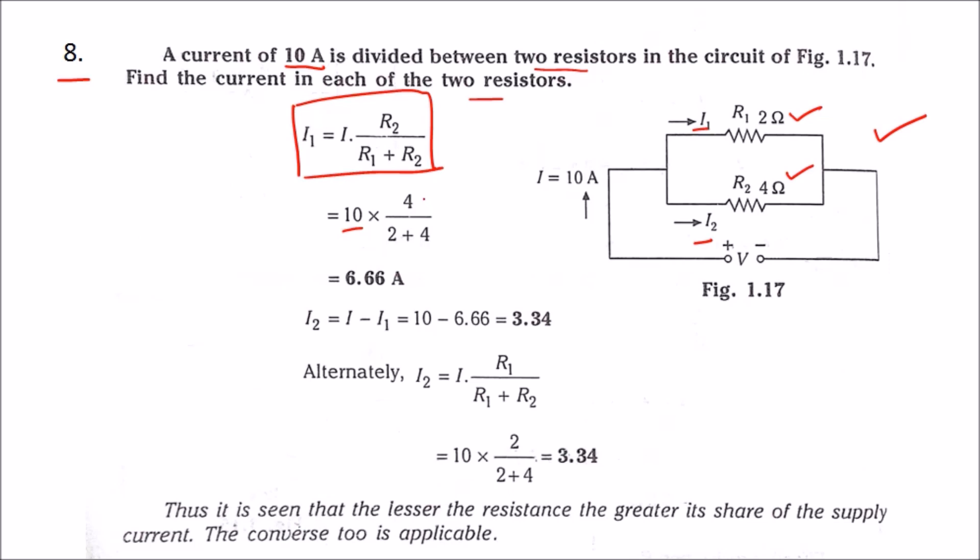Resistance value of r2 is 4 ohms and resistance value of r1 is 2 ohms. So simplifying this we get i1 is equal to 6.66 amps. By subtracting i1 from the supply current we get i2, that is 3.34 amps.